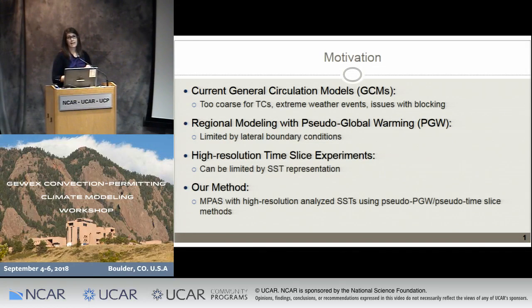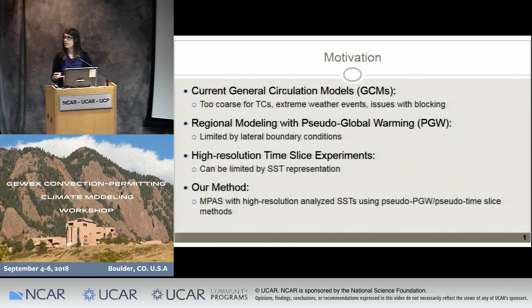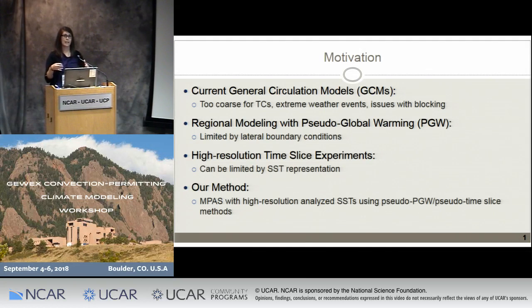Regional modeling with techniques like pseudo-global warming and downscaling are excellent ways to circumvent these resolution deficiencies of GCMs. With a smaller domain, that allows us to run at much finer grid spacings. But we're really constrained by those boundary conditions in the regional models, which is a big limitation. Some other groups have been doing higher resolution time slice experiments, which are really excellent, but a lot of these simulations are done with coupled models, and SST representation in these coupled models can lead to biases in regional climate projections. So we wanted to combine bits and pieces from each of these techniques and create our own simulations.